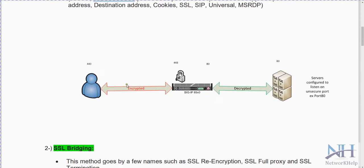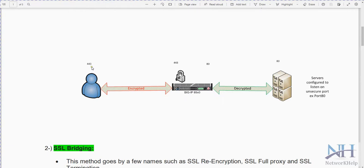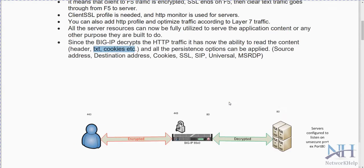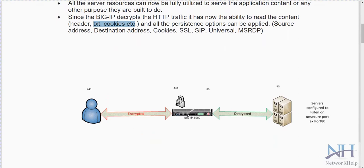In this diagram you can see the client workstation, the backend server, and F5 in between. The client sends a request via port 443. Between the client and F5, the traffic is encrypted. Between F5 and the server, SSL offloading is used — meaning F5 decrypts the traffic and sends it to the backend server in clear text. The server is configured to listen on an unsecured port.